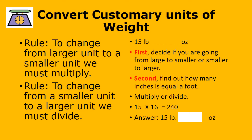Now we are going to do weight. The rules remain the same: larger to smaller, multiply; smaller to larger, divide. We have 15 pounds equals blank ounces. Pounds is greater than ounces, so we multiply. How many ounces equal a pound? 16. So we multiply 15 times 16, which gives us 240.